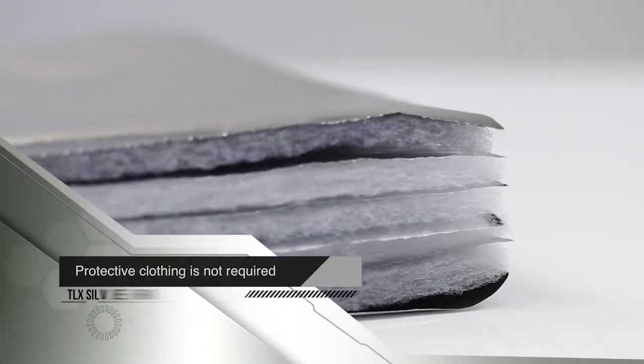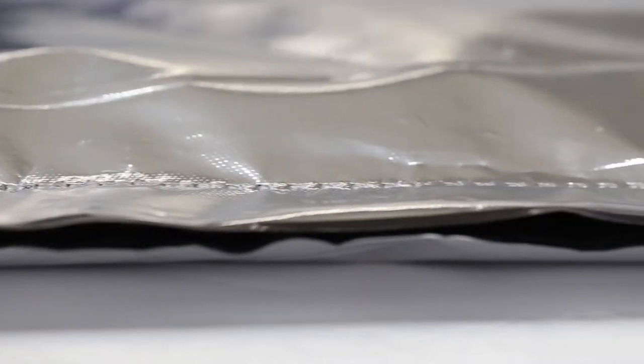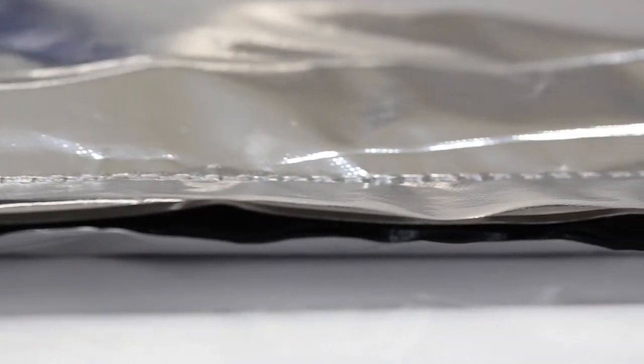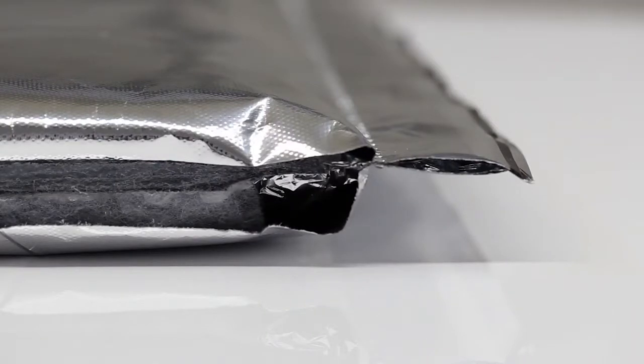Protective clothing is not required when handling TLX Silver and it can be installed either way up. It should always be combined with traditional insulation materials where possible that are fitted between the rafters or studs. It can be used in both roofs and walls.